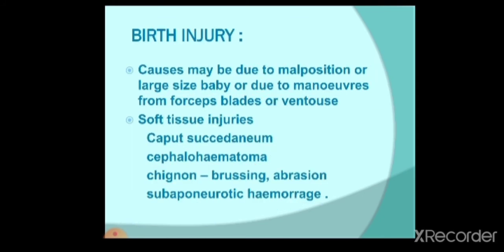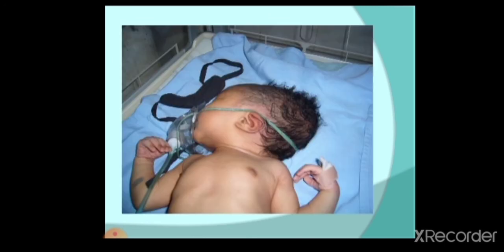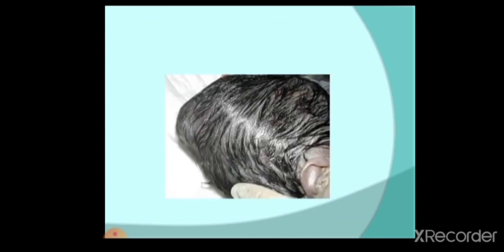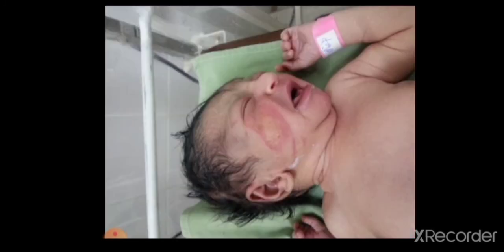We will now discuss birth injury. Causes of birth injury include malposition of the baby inside the uterus, large fetal size, or maneuvers using forceps or ventouse. Injury can be to the soft tissue, leading to caput succedaneum, cephalhaematoma, bruising, abrasion, or subgaleal haemorrhage. Images show swelling at the head consistent with cephalhaematoma, forceps blade marks over the forehead and nose with abrasions, and contusions over the cheek and eye.